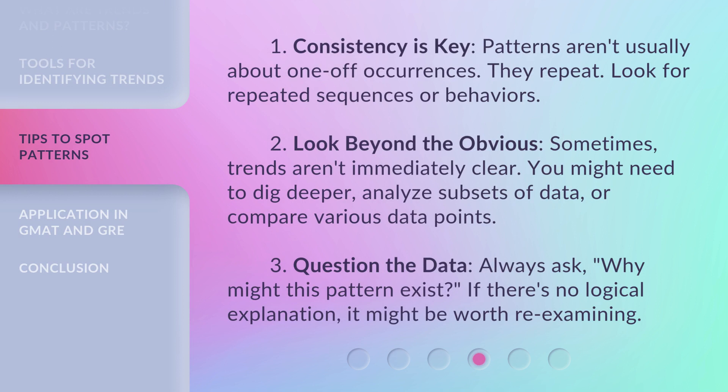1. Consistency is key. Patterns aren't usually about one-off occurrences — they repeat. Look for repeated sequences or behaviors. 2. Look beyond the obvious. Sometimes trends aren't immediately clear. You might need to dig deeper, analyze subsets of data, or compare various data points. 3. Question the data. Always ask: why might this pattern exist? If there's no logical explanation, it might be worth re-examining.